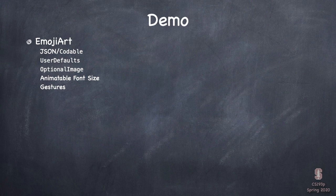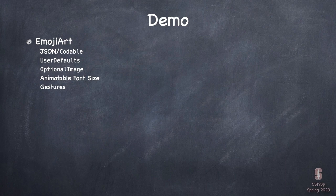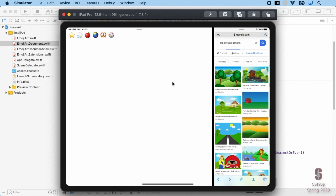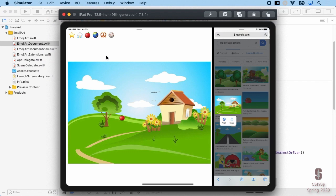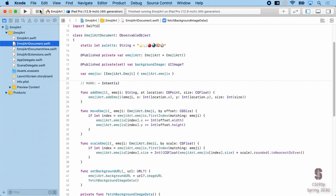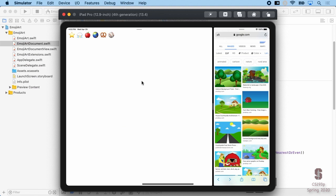Let's hop into the demo. I'm going to show you the Codable thing. We're going to use UserDefaults to store our document because I didn't have time to teach you about the file system yet. We're also going to do some cool stuff — animating fonts — but mostly we're going to do gestures in our EmojiArt: make our document bigger and smaller and pan around. Our EmojiArt has a big problem currently — if I build a beautiful EmojiArt with some apples at the base of a tree and then quit my app, when I come back I've lost all the work I've done.